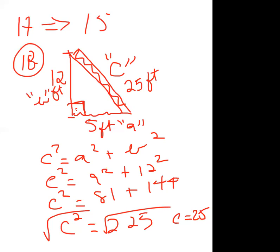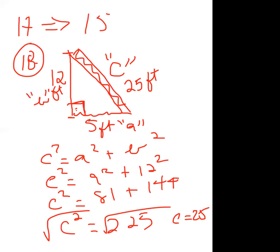Wait, I made a mistake — that is not 25. Let me fix that. The square root of 225 is 15, not 25. So the ladder needs to be 15 feet long. I used 9 and 12 in the calculation: 9² + 12² = 81 + 144 = 225, and sqrt(225) = 15.